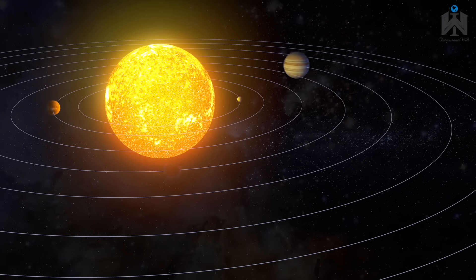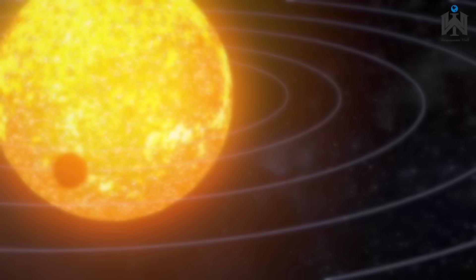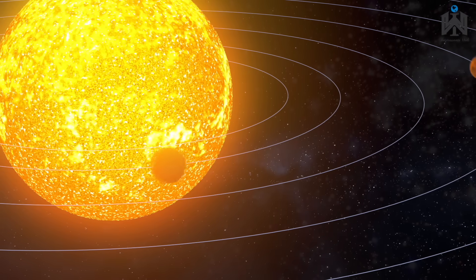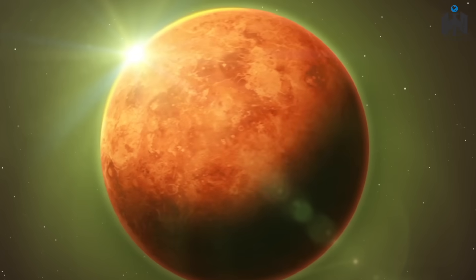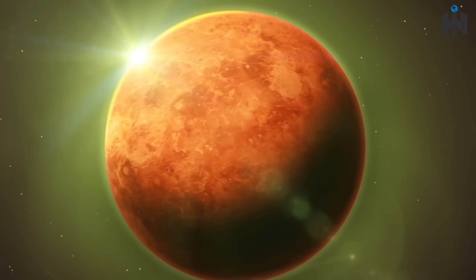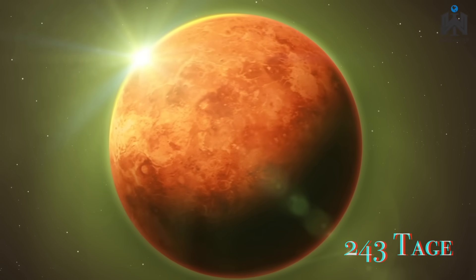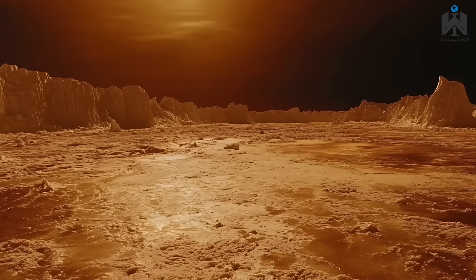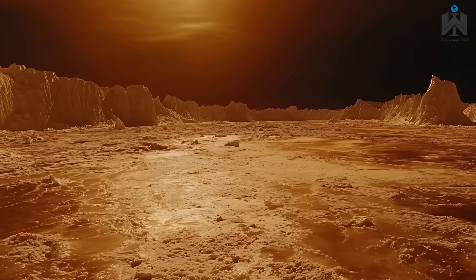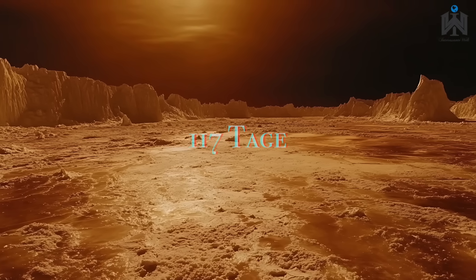Um die Unterschiedlichkeit zu verdeutlichen, ein Beispiel mit der Venus. Ein Venusjahr, das heißt eine Umlaufzeit um die Sonne, dauert ca. 225 Erdtage. Ein Venustag, also eine Rotation um die eigene Achse, ca. 243 Erdtage. Ein Sonnentag, das heißt ein Sonnenaufgang zu Sonnenaufgang, ca. 117 Erdtage.